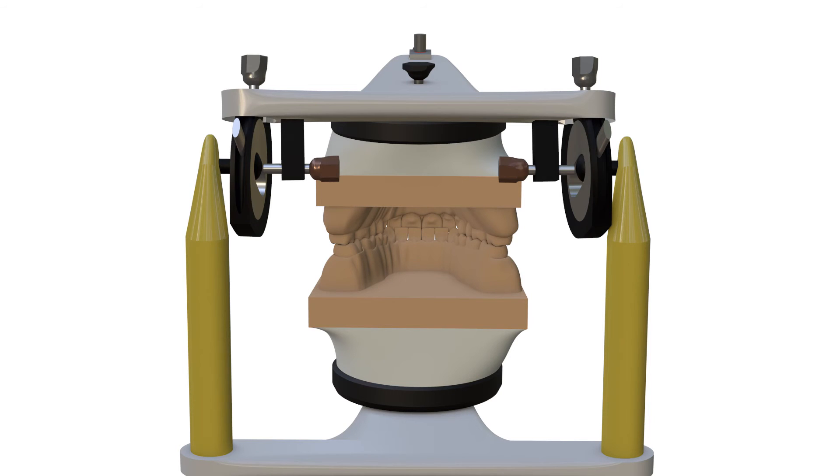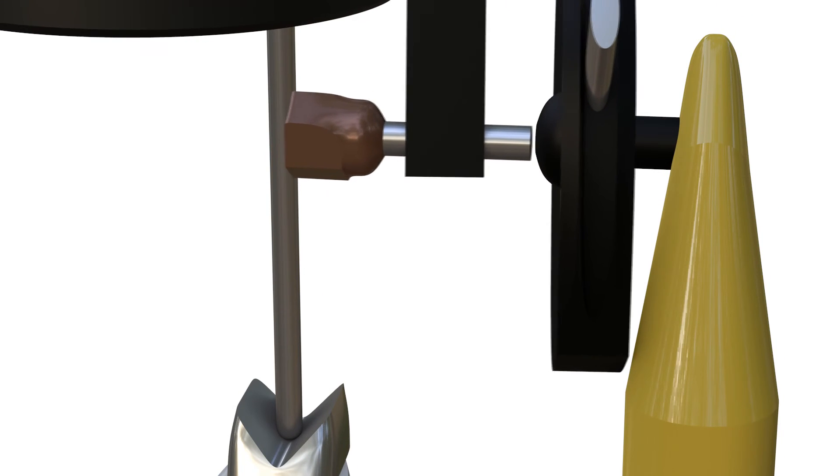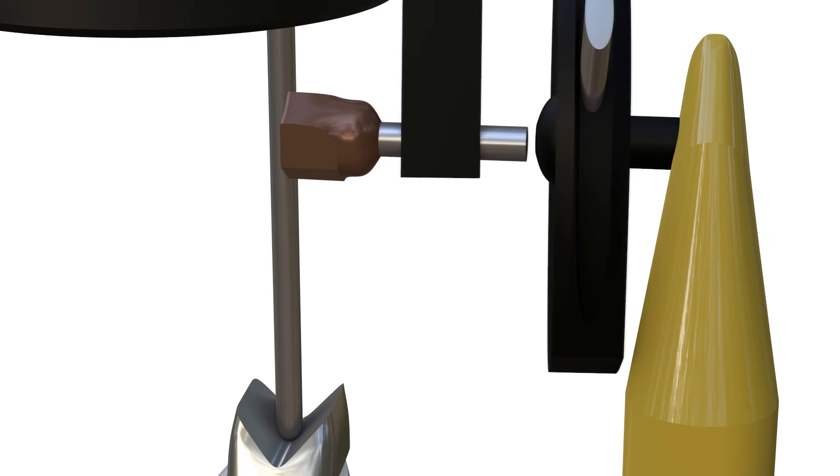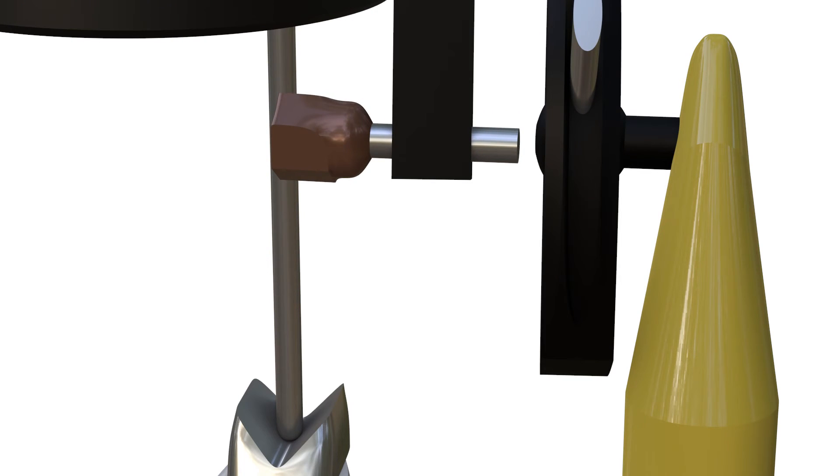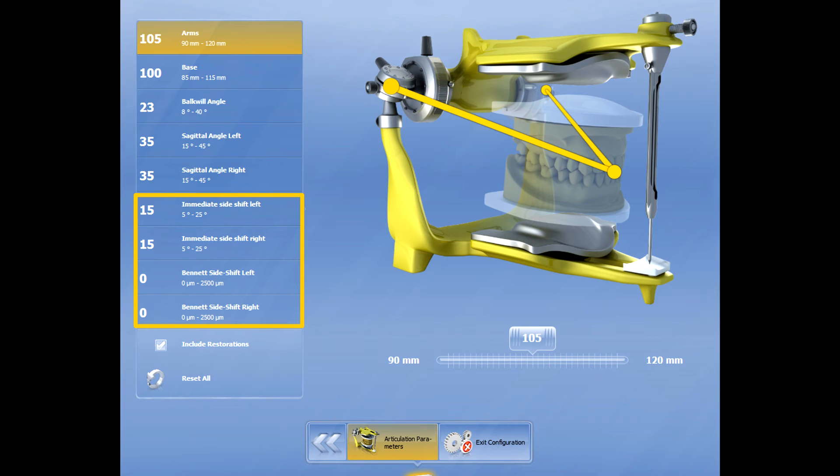In articulators that mimic this movement, right and left relieving screws are present. These screws should be relieved 0.5 millimeter to reach a total of 1 millimeter relief. For digital articulators, it is sufficient to enter the desired value.